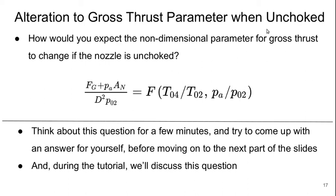And that was derived for a choke nozzle. Let's think about how we could alter this gross thrust parameter when the nozzle is unchoked. So what would essentially change in the definition of the parameter on the left side here if we had an unchoked nozzle. So think about this for a minute and try to come up with an answer before you move on to the next part of the video.